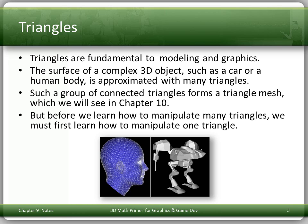Triangles are, as we've discussed already, fundamental to modelling and graphics. The surface of a complex 3D object, like a car or a human, can be approximated using lots of triangles. We call such a group of connected triangles a triangle mesh, which we'll talk about later. Over on the left we see a triangulated human head, and over on the right we have a walking robot type thing with lots of flat triangles.